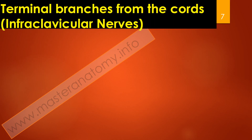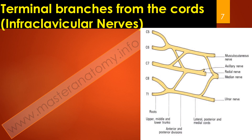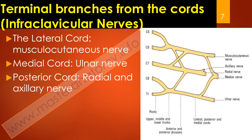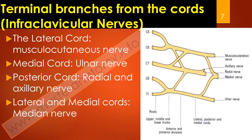The branches of the brachial plexus can be divided into two groups depending on their position relative to the clavicle. If they are above the clavicle, they are called supraclavicular nerves. If they are below the clavicle, they are called infraclavicular nerves. From the lateral cord, the terminal branch is the musculocutaneous nerve. The terminal branch of the medial cord is the ulnar nerve. The terminal branch of the posterior cord is the radial and axillary nerves. Importantly, the lateral and medial cords together give branches that form the median nerve.